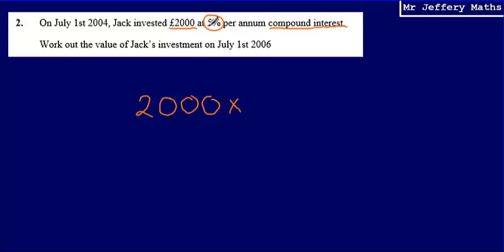So that means that we are going to be increasing the amount. And so that means that we are going to be increasing by 5%, and so our percentage multiplier for a 5% increase is going to be 1.05.